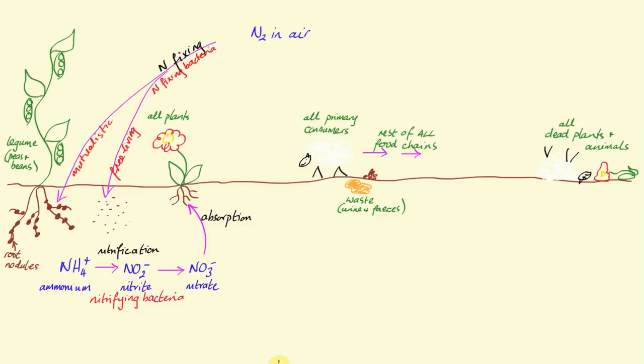And as a result of this absorption, it is then available for primary consumers to eat. In other words, it enters the nitrogen compounds, it enters the animal part of the food chain. And as a result of feeding, digestion and absorption, that is how all primary consumers get their nitrogen compounds from the plants. That is then passed up the rest of the food chain, but very sadly death occurs to all organisms on the planet.